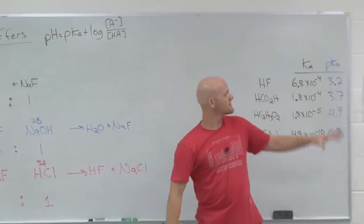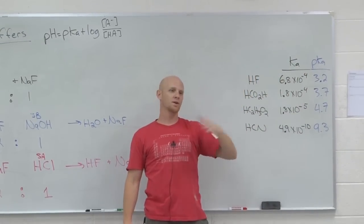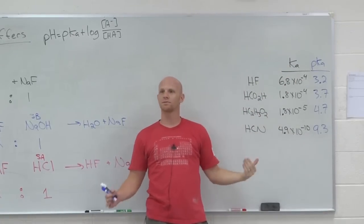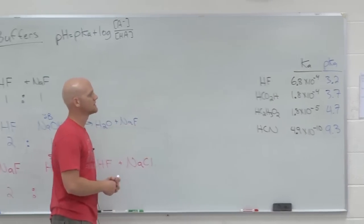So that's another kind of question. You might be just given a bunch of Ka's like I gave you here and said which of the following could make a buffer of pH whatever? Find the pKa's and find the one whose buffer range is applicable, or the ones in this case that are applicable.